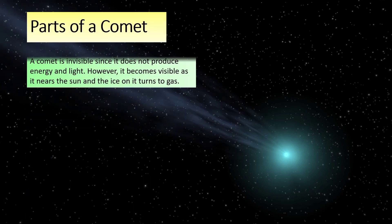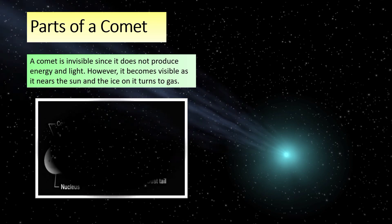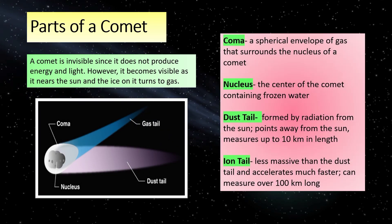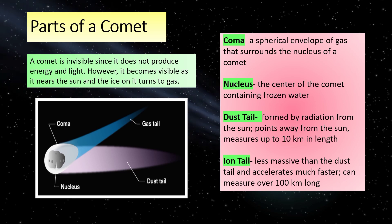A comet has different parts. A comet is invisible since it does not produce energy and light. However, it becomes visible as it nears the sun and the ice on it turns to gas. The coma and the nucleus comprise the head of the comet. Coma is a spherical envelope of gas that surrounds the nucleus. The nucleus is the center of the comet and it contains frozen water. The tail is formed by radiation from the sun, points away from the sun, and measures up to 10 kilometers in length. The ion tail, compared to the dust tail, is less massive but it accelerates much faster and can measure over 100 kilometers long.